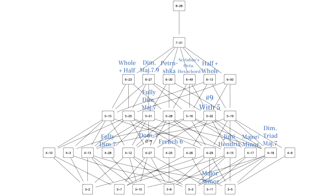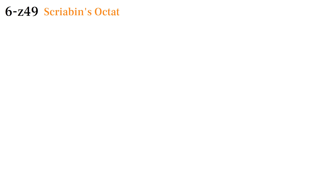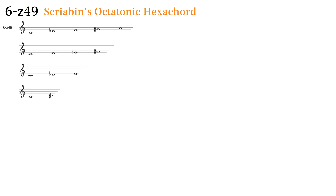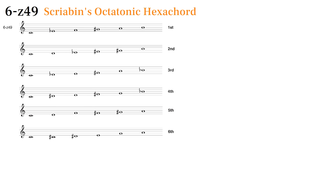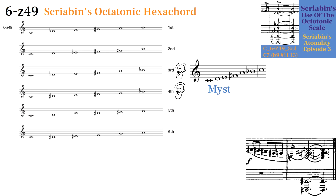6Z49 is Scriabin's octatonic hexachord, which he uses in his music almost as much as the mystic chord. Scriabin likes to use the mode where it's voiced as a flat 9, sharp 11, 13 chord, or as a sharp 9, sharp 11 chord. I talk about this set more in depth in my video on Scriabin's use of the octatonic scale. Here's an example of Scriabin using the third mode, which is just like the mystic chord with a lowered second scale degree, at the end of 74-3.